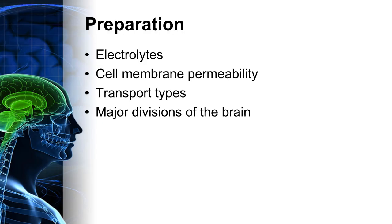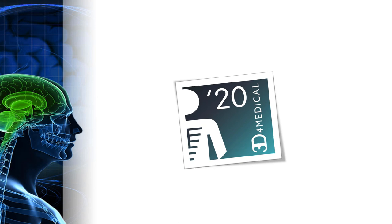In addition to the learning module lesson objectives, we're going to need some preparation. This is going to build upon things you've already learned in my other classes on electrolytes, cell membrane permeability, how things move in and out of cells, and the major divisions of the brain. When you see this logo in the slides, that'll prompt you to look at the assigned lesson work in Complete Anatomy. That lesson work is in the order that the slideshow is in.